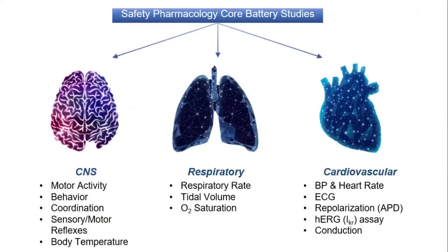Safety pharmacology core battery studies: first, CNS — the effect of a test substance on the central nervous system should be assessed, including motor activity, behavior, coordination, sensory-motor reflexes, and body temperature. Second, the respiratory system — main parameters are respiratory rate, tidal volume, and hemoglobin oxygen saturation. Third, the cardiovascular system — main parameters are blood pressure, heart rate, ECG repolarization, hERG assay, and conduction.